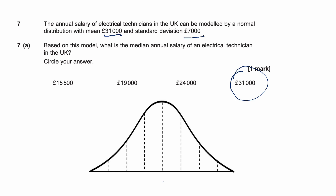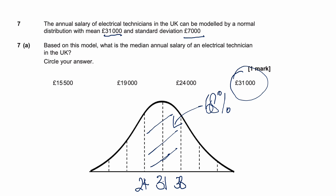I'll do a quick sketch of the data using the information we've been given. The mean and median is 31,000, which goes in the middle, and the standard deviation is 7,000. Adding 7,000 to 31,000 gives 38,000; subtracting gives 24,000. Within that range we have 68% of our data. Adding another standard deviation either side gives 45,000 and 17,000, and within 17,000 to 45,000 we have 95% of our data.